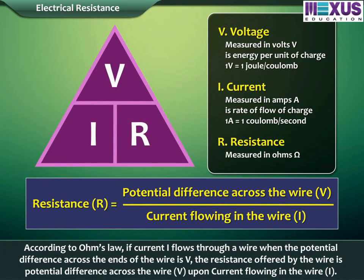According to Ohm's law, if current I flows through a wire when the potential difference across the ends of the wire is V, the resistance offered by the same wire is V upon I.